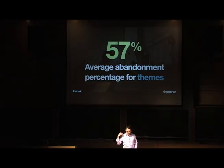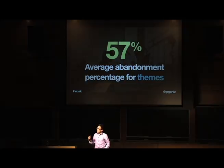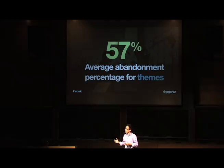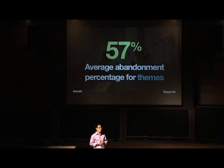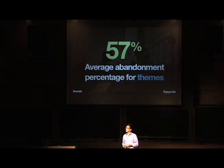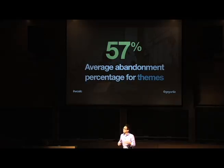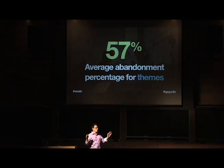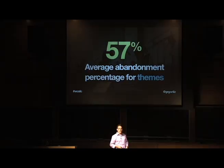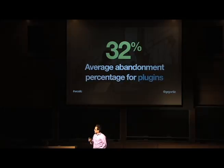There was a talk Matt Mullenweg gave at the State of the Word earlier this year about how the attrition rate for WordPress — people who install it or set up a WordPress.com blog and then never do anything with it — is still relatively high. This is why WordPress core introduced the 'getting started' page when you activate for the first time. But for developers, we're still kind of 'meh' — as long as people download our themes or we get paid, that's where our passion ends. And 57% abandonment is insanely high.